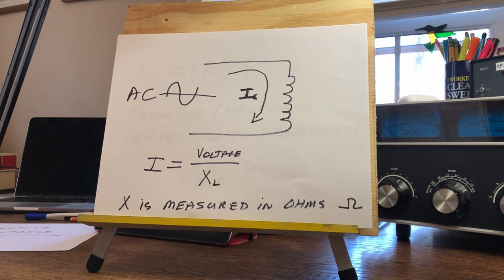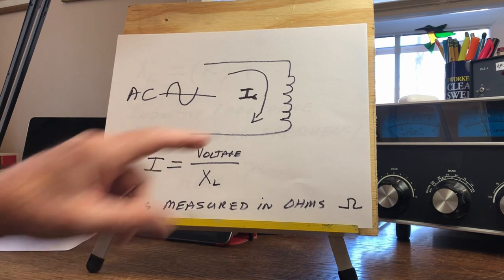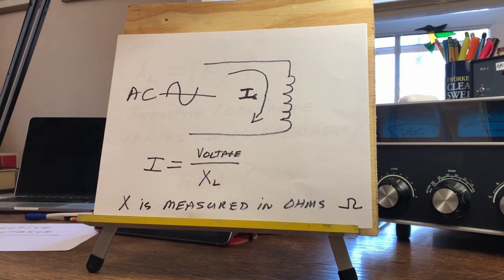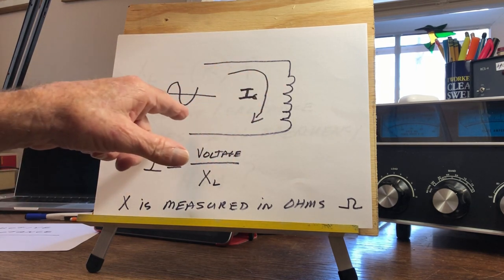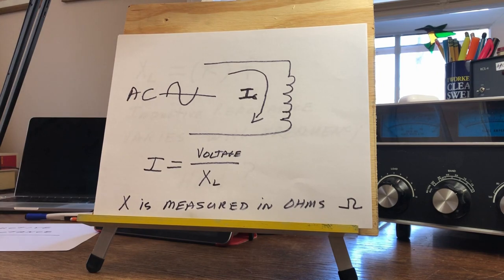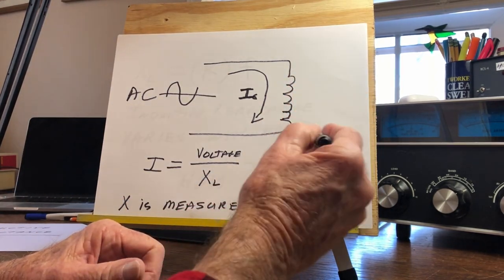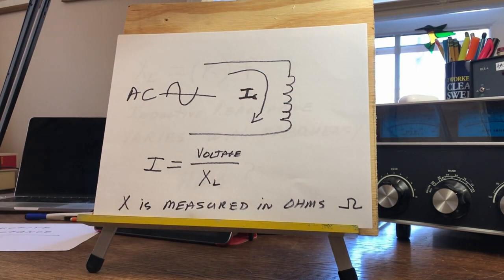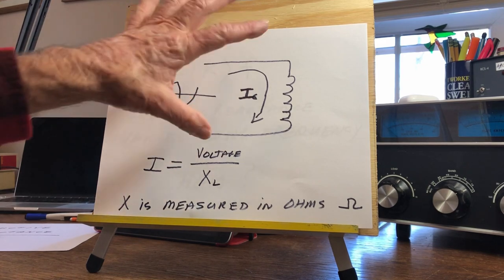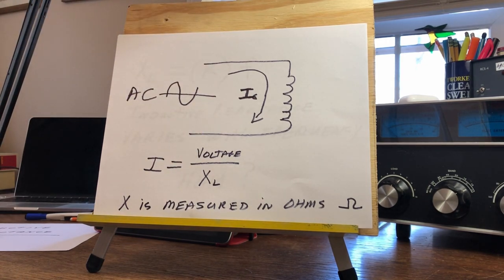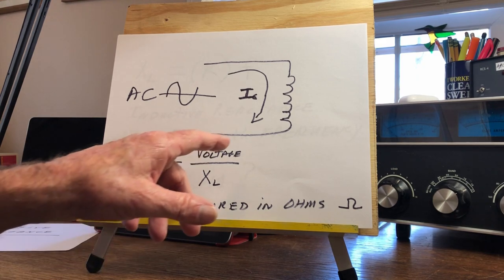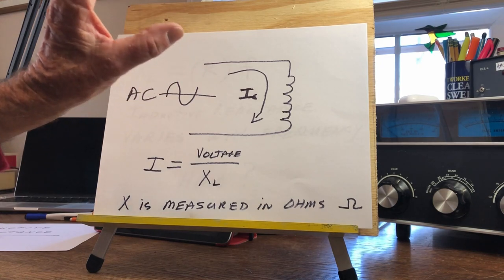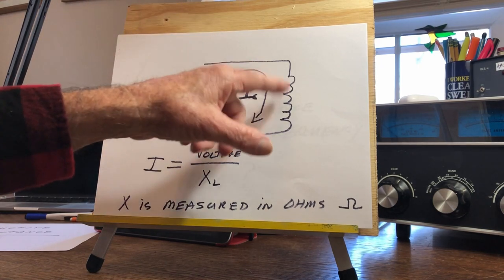Now we have a coil hooked up to an AC circuit. If this were a DC circuit, current would flow through the coil, set up a magnetic field around the coil, and then flow unimpeded — just like a wire. There would only be a very small, insignificant amount of resistive losses in the coil.